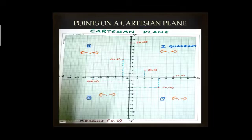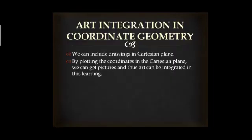In the Cartesian plane, the first quadrant has positive, positive coordinates; the second quadrant has negative, positive; the third quadrant has negative, negative; and the fourth quadrant has positive, negative. We can also integrate art in coordinate geometry by including drawings on the Cartesian plane — by plotting coordinates and joining them with line segments, we can get beautiful pictures.